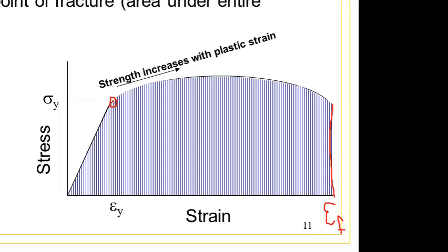Toughness is the combination of both strength and ductility. In other words, it's the ability of the material to absorb mechanical energy. And it turns out that energy is the area underneath the stress-strain diagram.